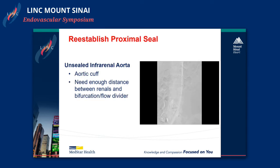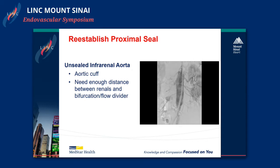When talking about reestablishing the proximal seal zone, in the most basic concept, you have a situation where an EVAR was placed but not brought to the immediate infrarenal position, so you have uncovered aorta between the top of the endograft fabric and the renals. This is very easy to fix: take an aortic cuff and bring it to the renals. You just have to be wary of how long the aortic cuff is so that you don't jail the renals or jail the contralateral limb at the flow divider.